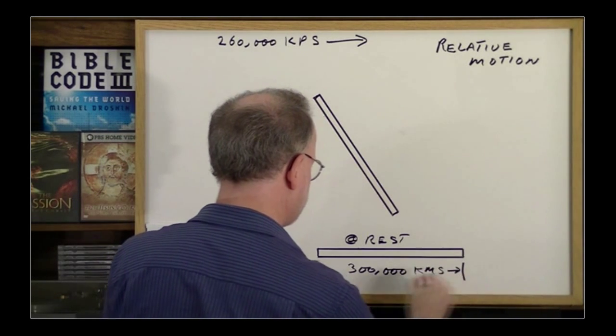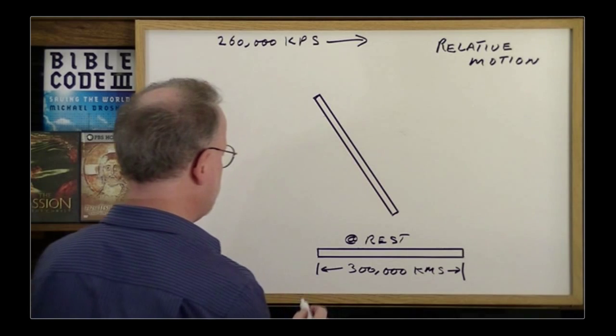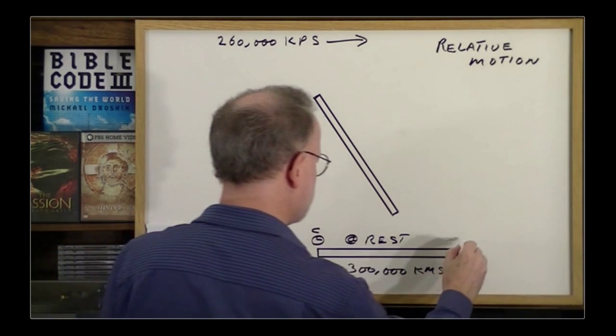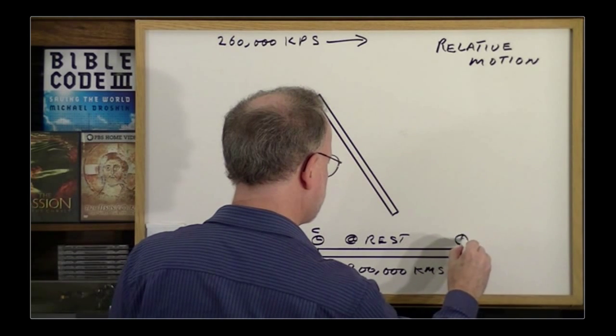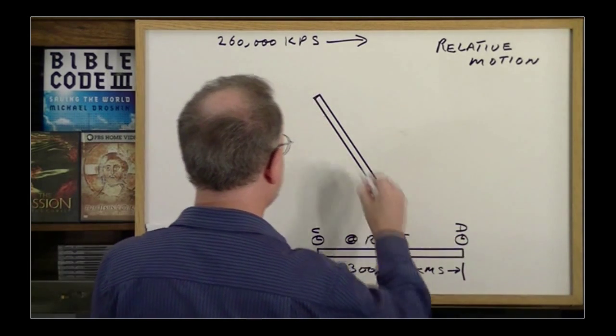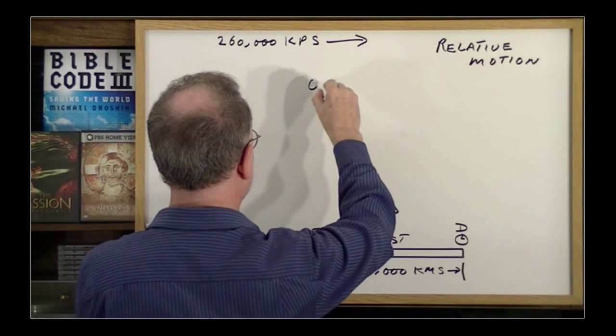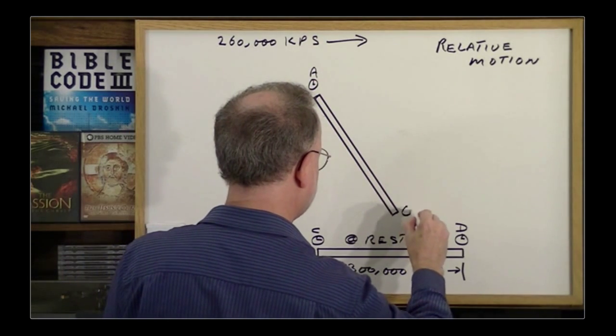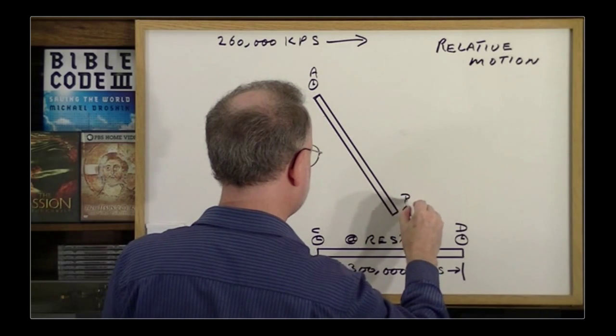We'll put a clock here, we'll call this clock C. A clock at the other end, we'll call that clock D. A clock here at this end, we'll call it clock A. A clock at the other end, we'll call it clock B.